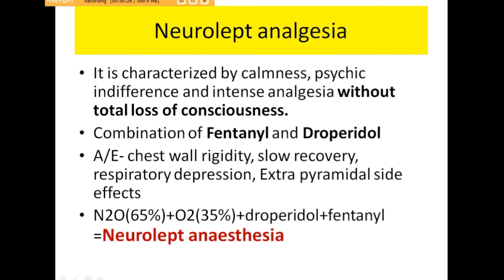Neurolept analgesia is characterized by calmness, psychic indifference, and intense analgesia without total loss of consciousness. It is the combination of fentanyl (the analgesic) and droperidol (the neuroleptic antipsychotic agent). Adverse effects include chest wall rigidity because of fentanyl, slow recovery, respiratory depression because of fentanyl, and extrapyramidal side effects because of droperidol. Neurolept anesthesia is achieved when nitrous oxide and oxygen are added along with droperidol and fentanyl.